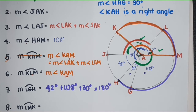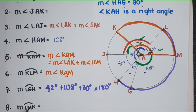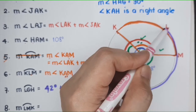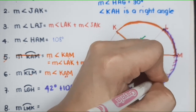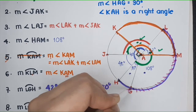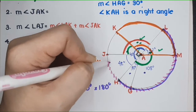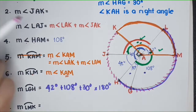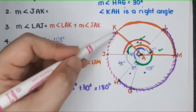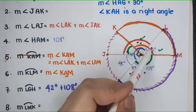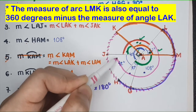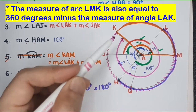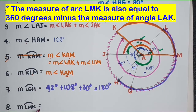Last arc: where is arc LMK? It's a long arc — from L to M to K. All you have to do is add all the angles from this point up to that point, and you will get the answer.